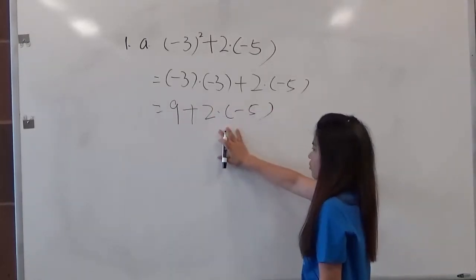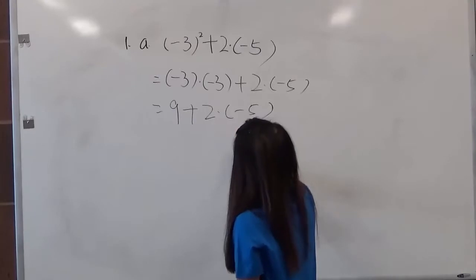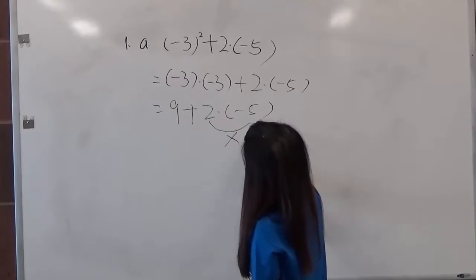So the next step is we need to calculate the multiplication. So 2 times negative 5, which is negative 10.